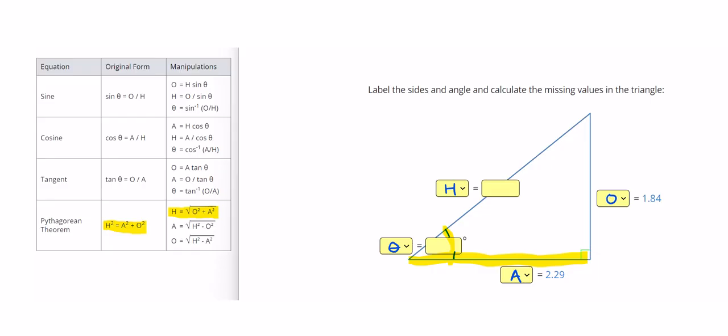So let me go ahead and write that down with the numbers plugged in. So I say H equals the square root of O squared, so 1.84 squared plus 2.29 squared. And if I plug that into my calculator, I get 2.94.